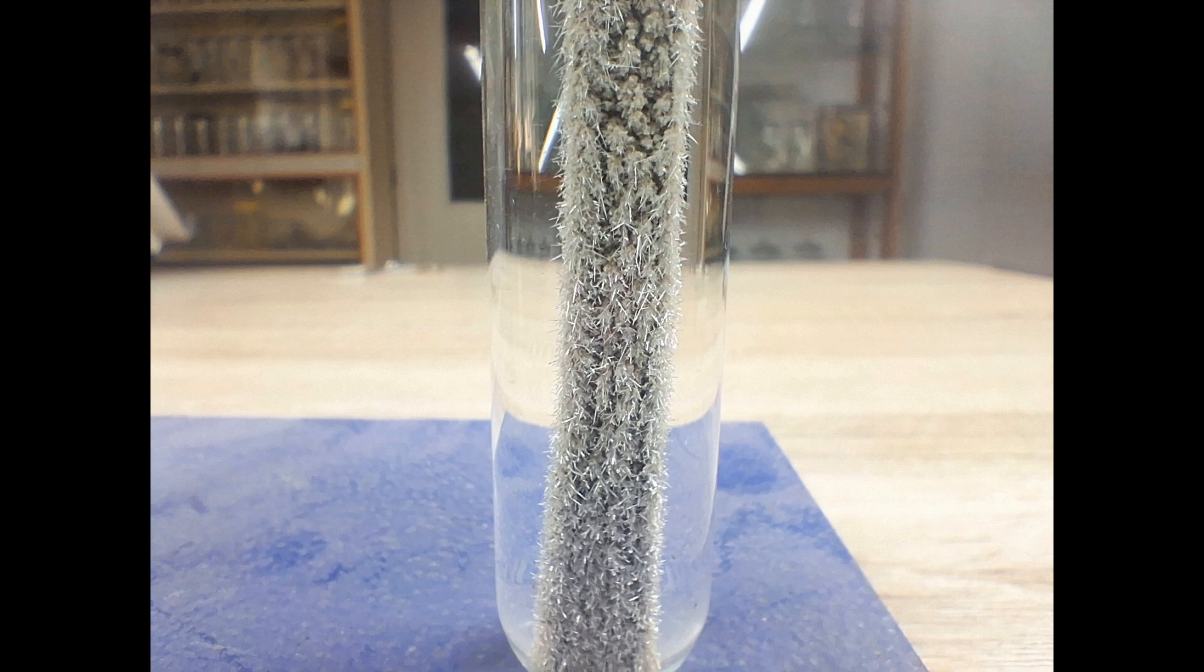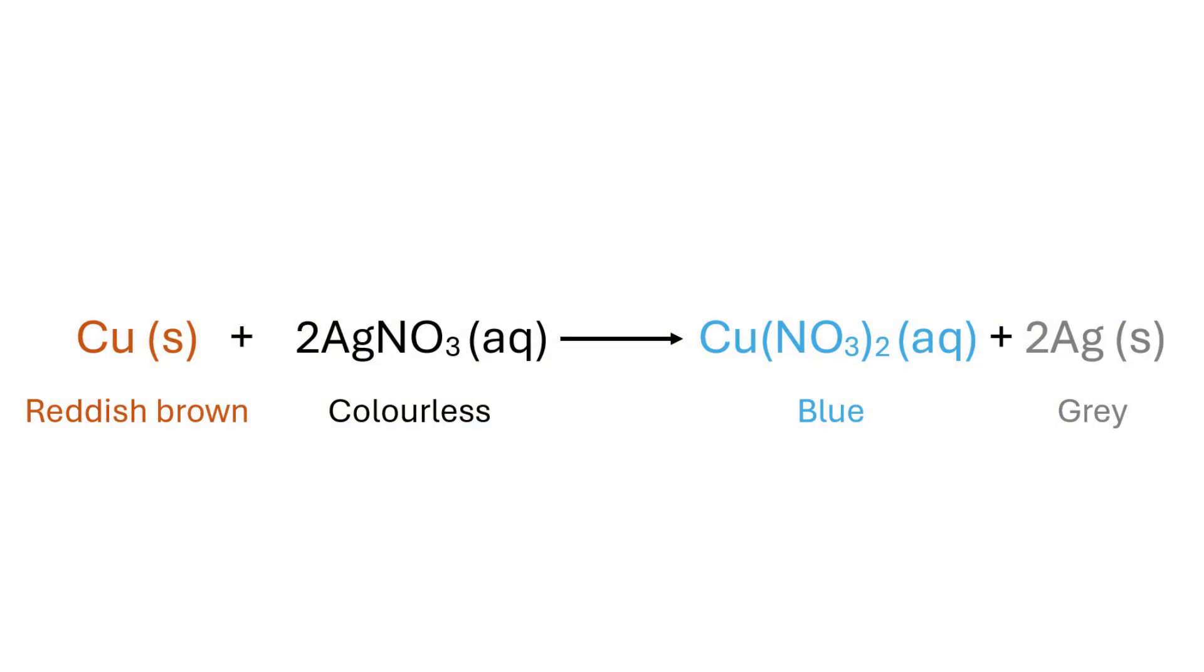The single metal-metal displacement reaction of copper and silver nitrate can be represented by the chemical equation shown here. In this displacement reaction, the more reactive copper displaces the less reactive silver from its aqueous solution.